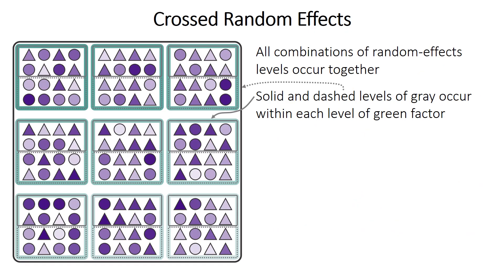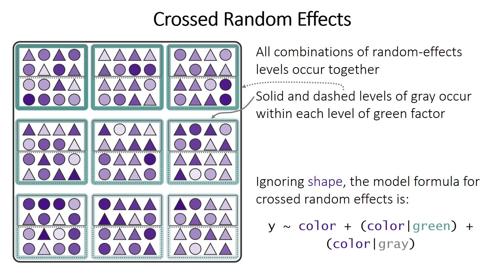It's also possible to have crossed random effects, which technically are anything that's not nested. In a fully crossed design, all combinations of the random effect levels occur together — all combinations of the gray occur in each example of the green. The formula for crossed random effects, just for color, lists each random effect as affecting the independent variable color separately.